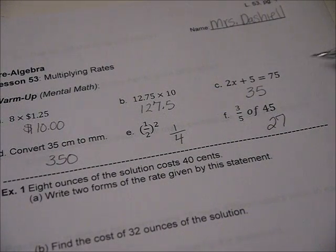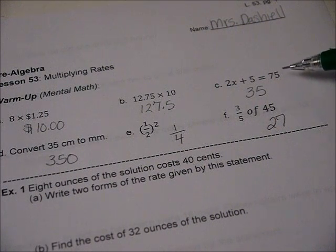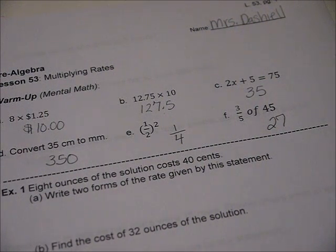2 times something plus 5 equals 75. So what I think is, all right, 2 times something equals 70, and that something is 35.